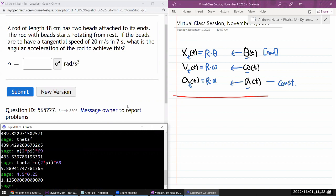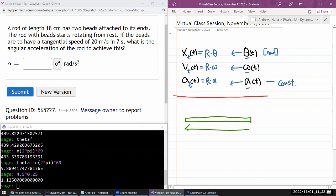It says a rod of some length has two beads. Let me sketch it out. I've got some rod with length given, with two beads attached to the ends. The rod with the beads starts rotating from rest. I'm going to make a reasonable assumption that the rod is rotating about its center and the tangential speed of beads are the same, which would be the case if it's rotating about its center. Tangential speed of 20 meters per second in seven seconds.